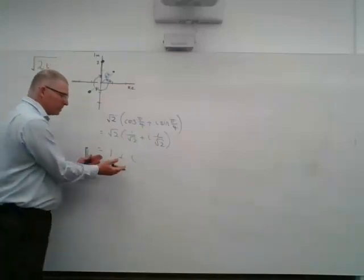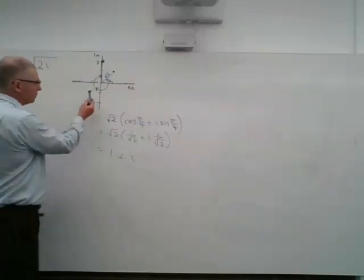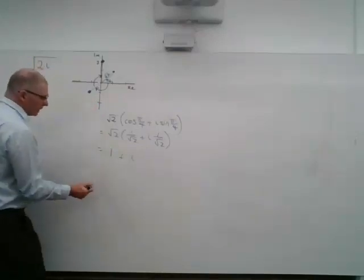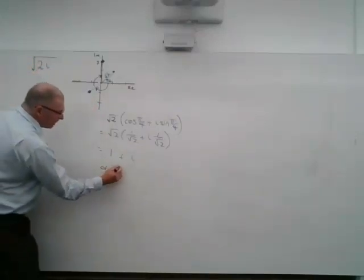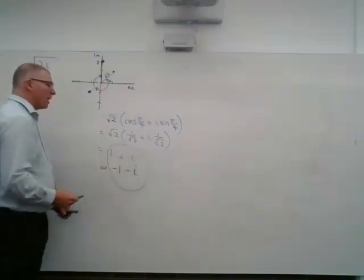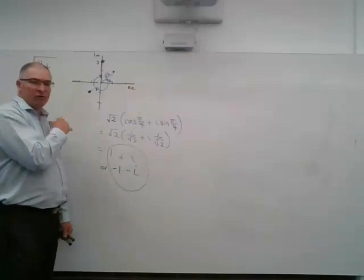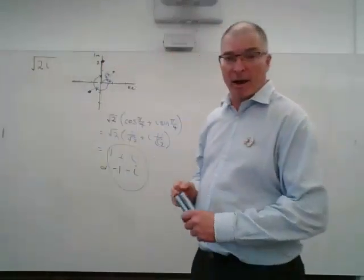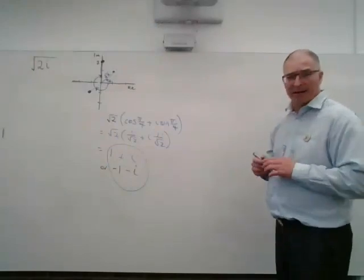So 1 plus i is one of the roots, and also over here at 180 degrees to it is minus 1 and minus i. So there's my two square roots of 2i geometrically. But we could do this algebraically, so I want to have a look at that as well.